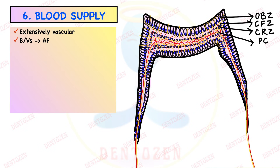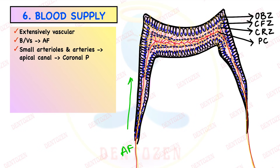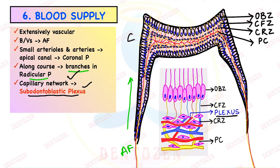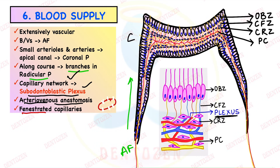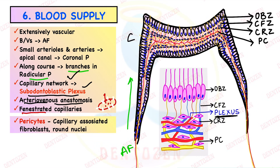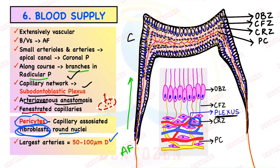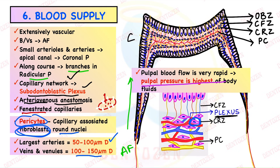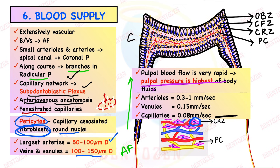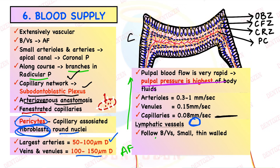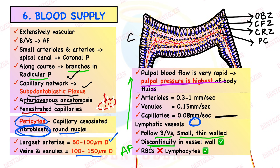Regarding blood supply, pulp is extensively vascular. Blood vessels enter the apical foramen, give branches in the radicular pulp, and show extensive branching in the coronal pulp, forming a capillary network known as the subodontoblastic plexus of capillaries. Arteriovenous anastomoses can be seen where arteries and veins are directly connected. Fenestrated capillaries — with pores — allow rapid movement of nutrients to cells. Pericytes are capillary-associated fibroblasts that regulate blood flow. The largest arteries are 50 to 100 microns and veins are 100 to 150 microns in diameter. Pulpal pressure is the highest of all body fluids. Lymphatic vessels follow blood vessels and have thin walls with discontinuities.